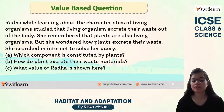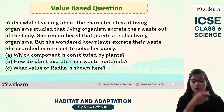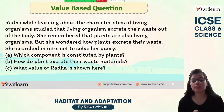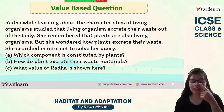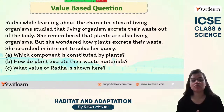While studying characteristics of living organisms, Radha remembered that plants are also living organisms but wondered how plants excrete their waste. She searched online and noted that plants form the biotic component of a habitat. Plants excrete water through the process of transpiration; gaseous waste is given out through stomata. Some deciduous plants pass their excess waste material to leaves and then shed those leaves — that is how they excrete waste materials.